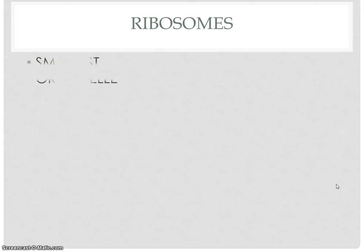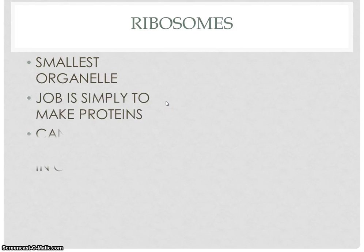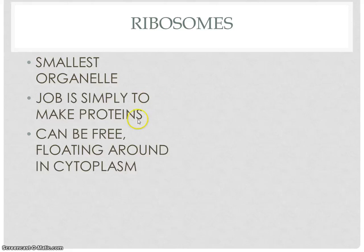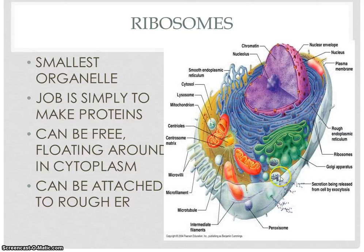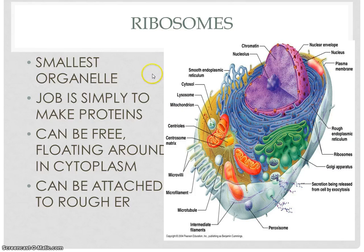Speaking of ribosomes — we've got to hit these because they're super important. They are our tiniest organelle; we won't be able to see them in the microscope. But their job is simple: make proteins. We can find them free-floating around the cell. Here's a really close-up look — these are a bunch of ribosomes in the process of building a protein. Looking in the cell, we can see they're attached to the rough ER, but some of them are also free out in the cytoplasm, all over the cell. They're everywhere because everything is because of proteins — so they're very, very important.